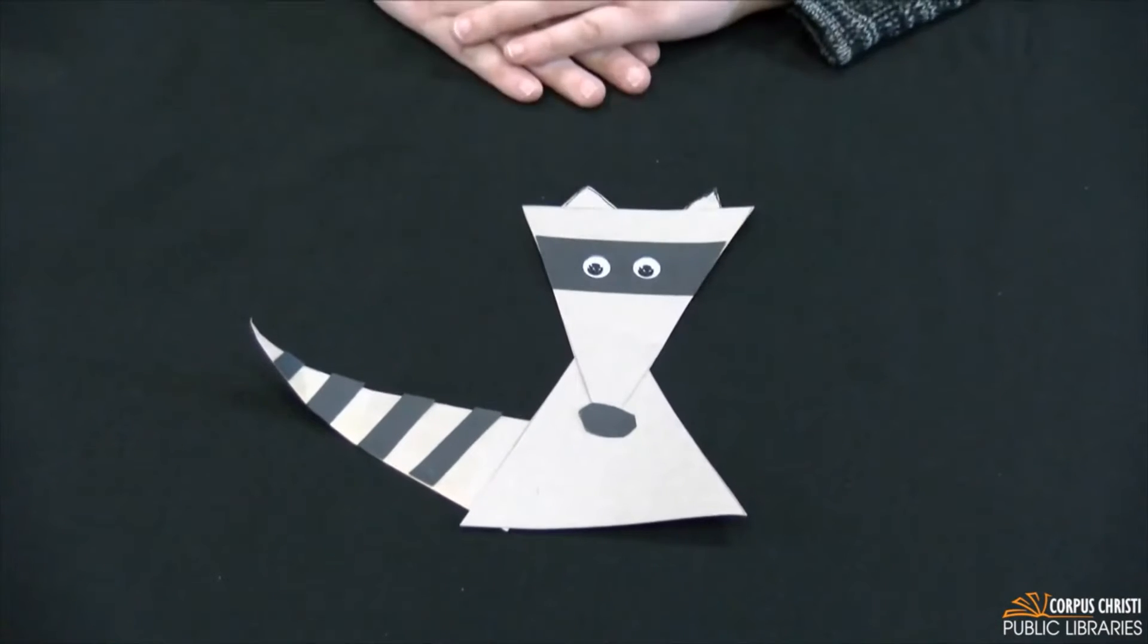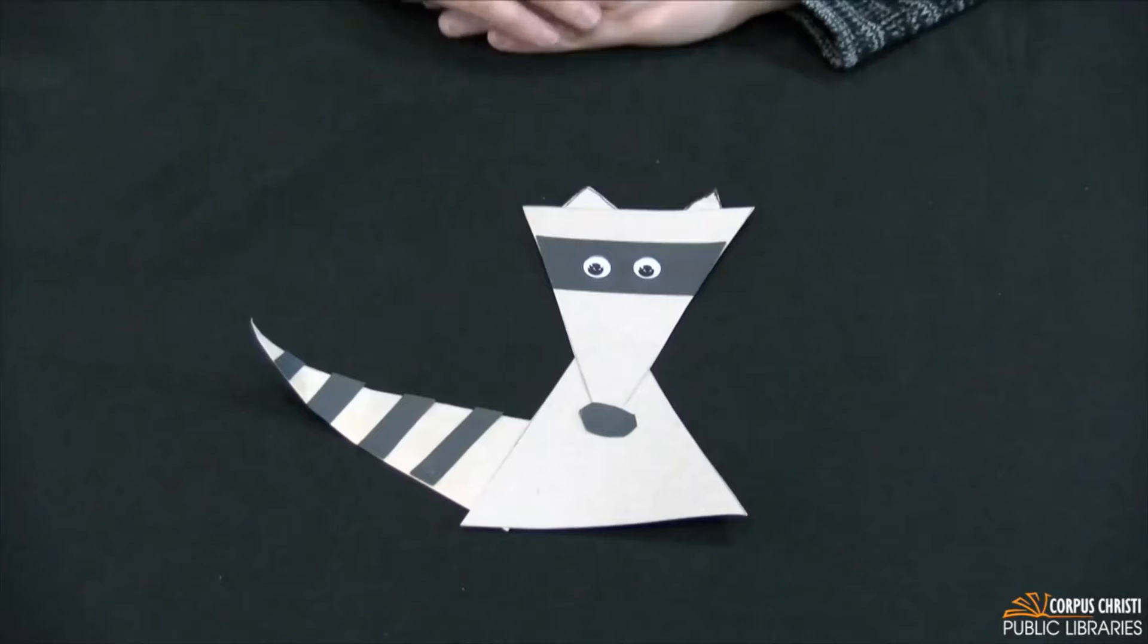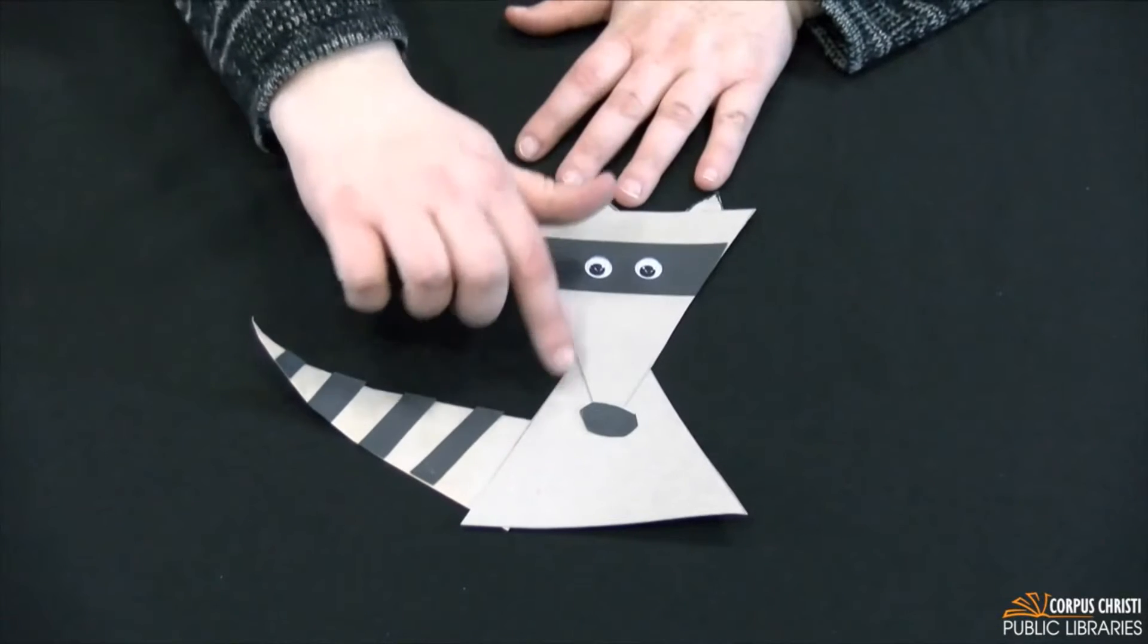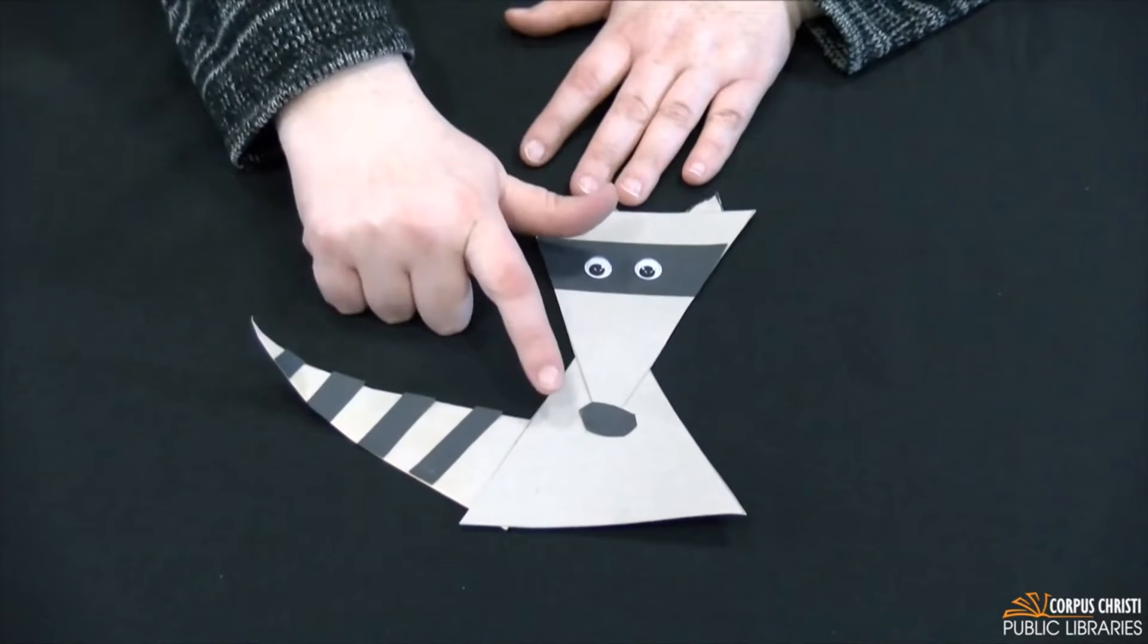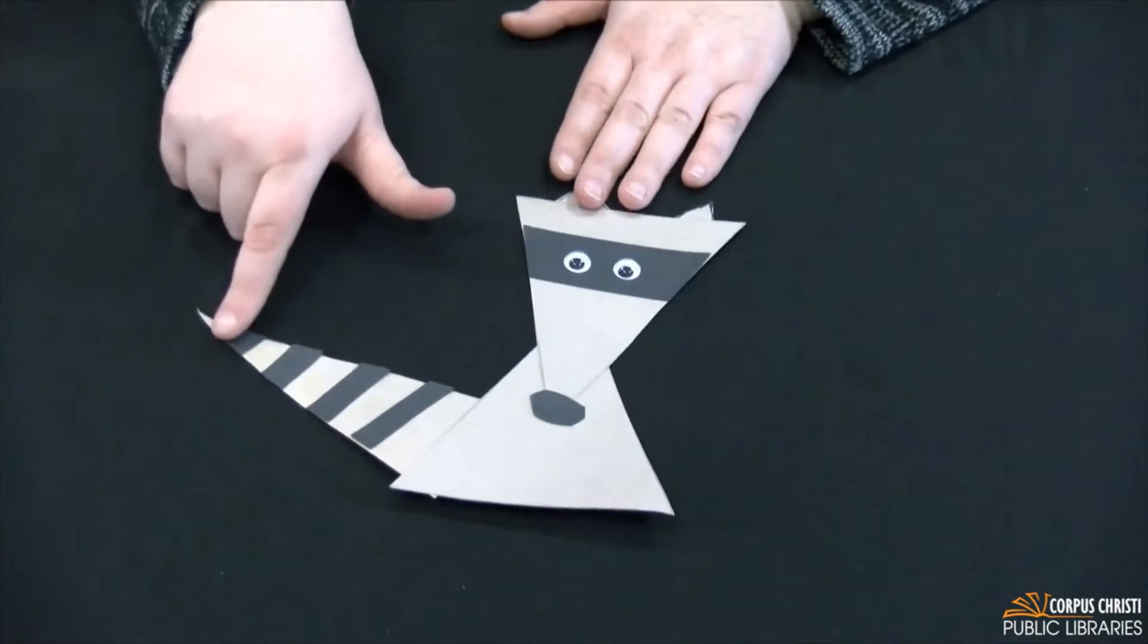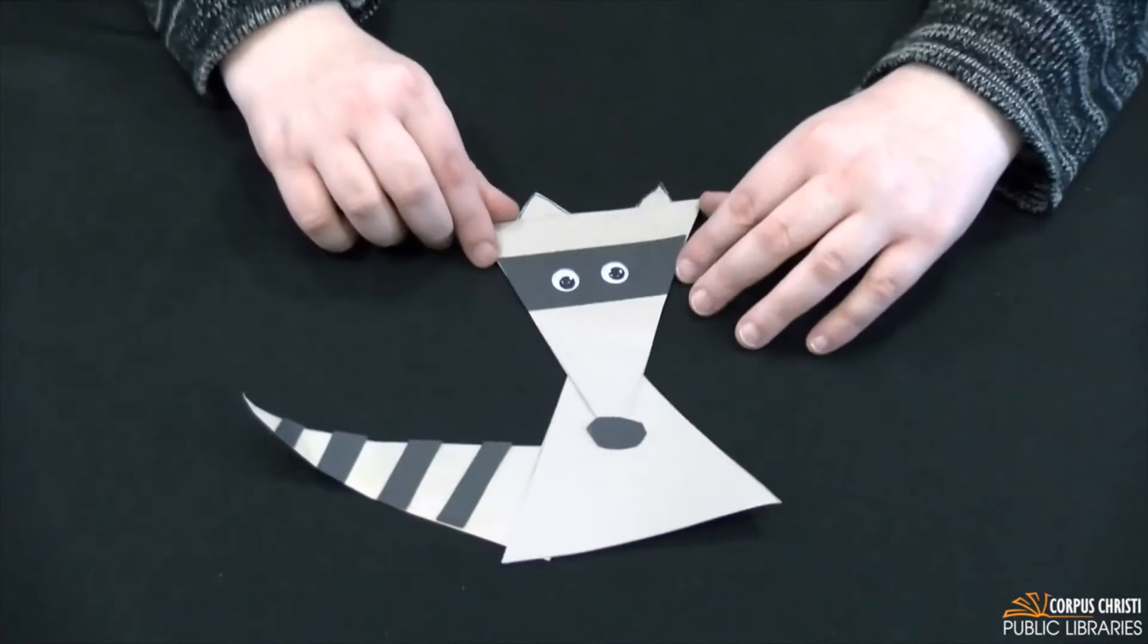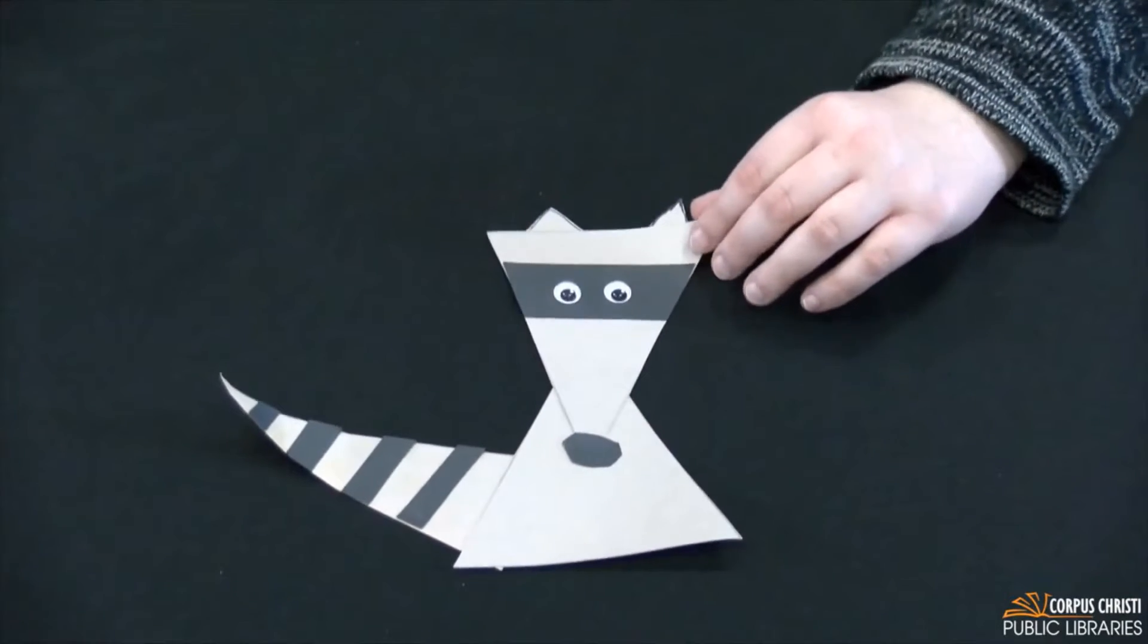So the first thing we're going to do is get all our shapes ready. We're going to cut out some triangles. We're going to cut out two large triangles. As you can see that's going to be the head and the body, a medium-sized triangle that's a little longer, that's going to be the tail, and two very small triangles for the ears. So let me get my gray paper and we'll start doing that.